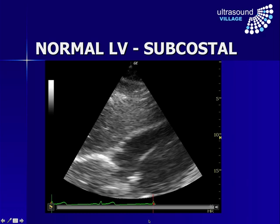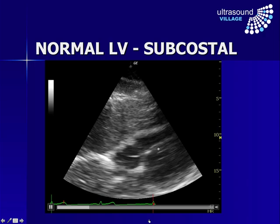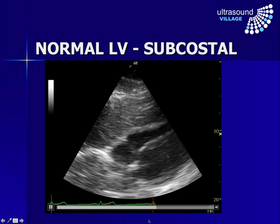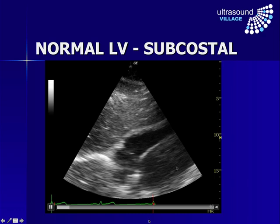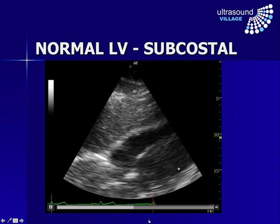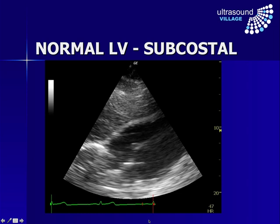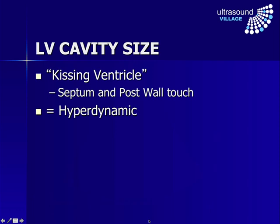This is from the subcostal view. Here we have the right ventricle on top near the liver, the left ventricle down here, and we can see the cavity size reduction — not quite as clearly as on the parasternal angle, but we can still see that this is contracting normally. Now, what about abnormal function? In a hyperdynamic heart, the fractional shortening will be greater than a third, and at its extreme you can sometimes get the septum and the posterior wall virtually touching. This is sometimes referred to as a kissing ventricle, and if you see this, that's definitely a sign of a hyperdynamic and generally underfilled left ventricle.